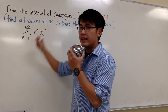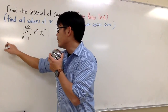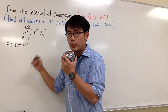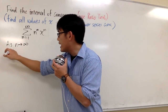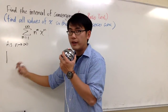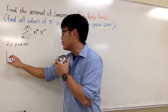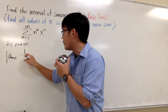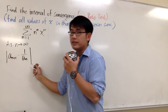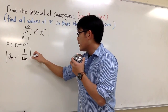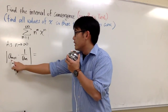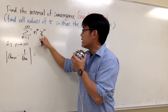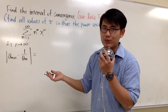We take this as a_n, and for the ratio test we are going to take the limit as n goes to infinity, and then we look at a_{n+1} over a_n, which is the same as a_{n+1} times 1 over a_n, and then we put this in absolute value. For a_{n+1}, let's refer to this and change all the n into n plus 1.